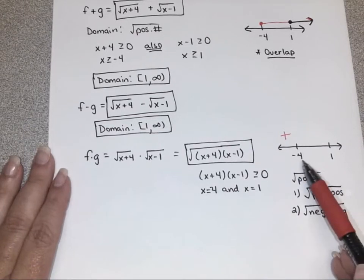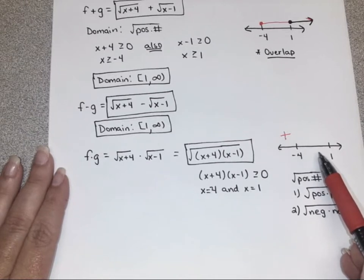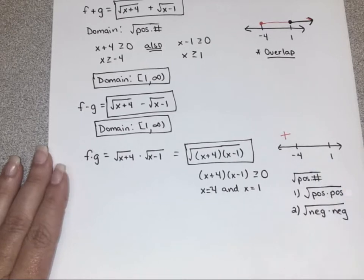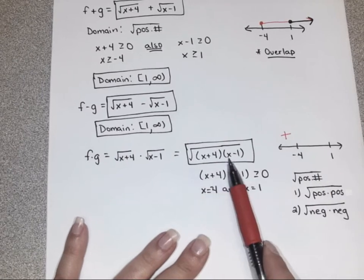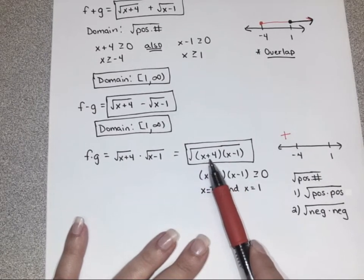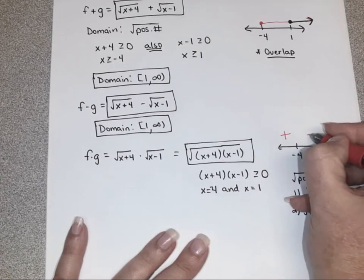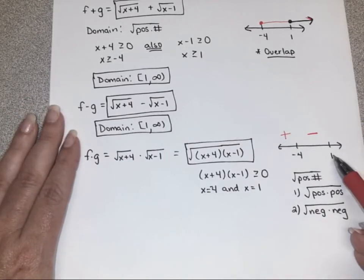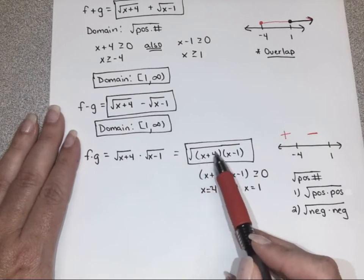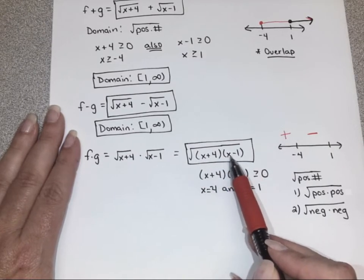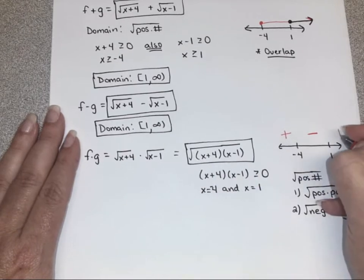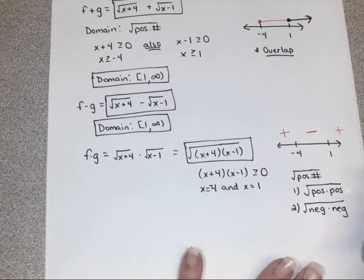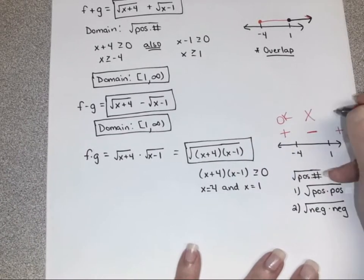So in the middle we're getting negative results, and we already talked about that that's not going to be okay. Then let's look to the right of 1 — if you plug in 2, notice we're positive here, and 2 minus 1 is positive, so we get a positive times a positive, which is a positive. So this section's okay, this section is not, and this section's okay. The middle section gives us a negative under the root. So in the end, we just have a domain of negative infinity to negative 4, including negative 4, and then everything from 1 to infinity.